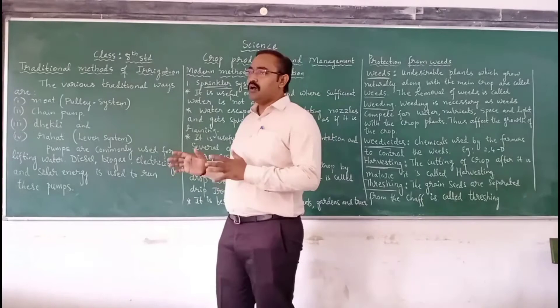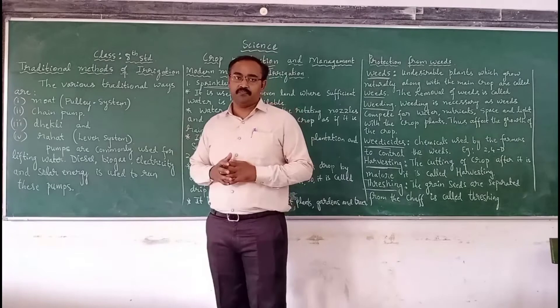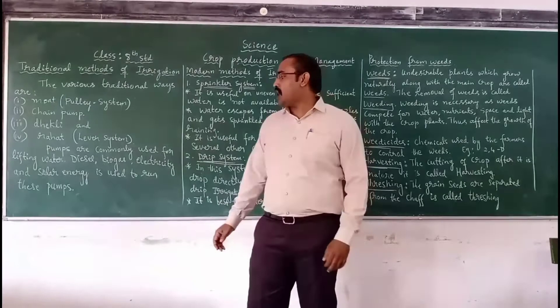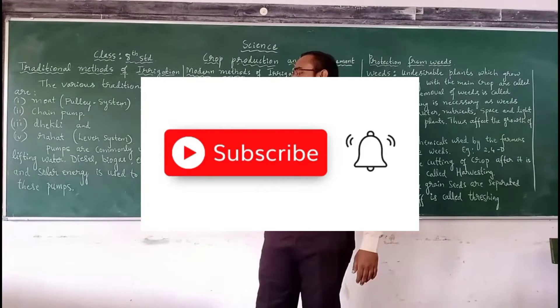All these are some of the traditional methods of irrigation. Here, pumps are commonly used for lifting water. Diesel, biogas, electricity and solar energy are used for running these pumps.